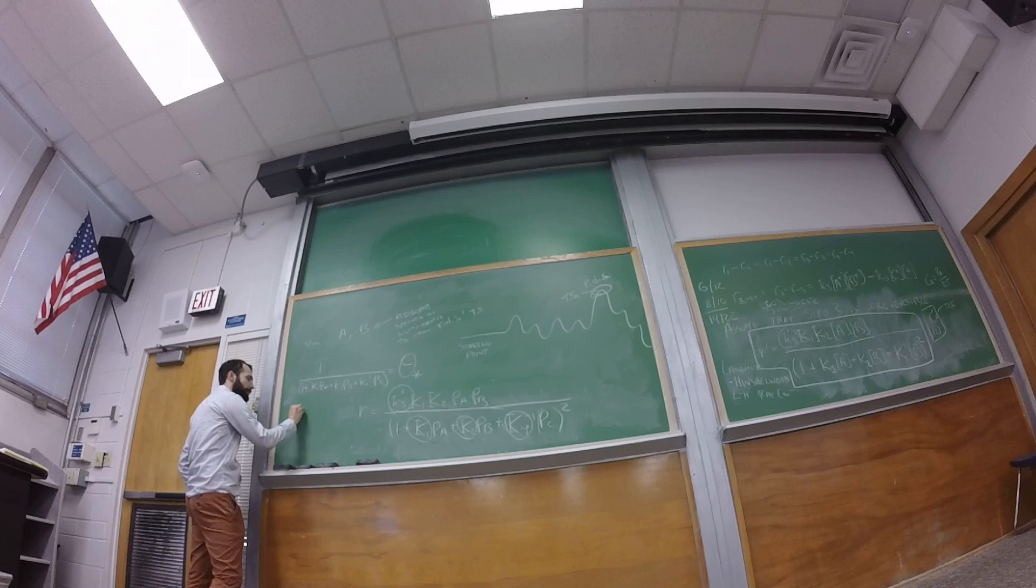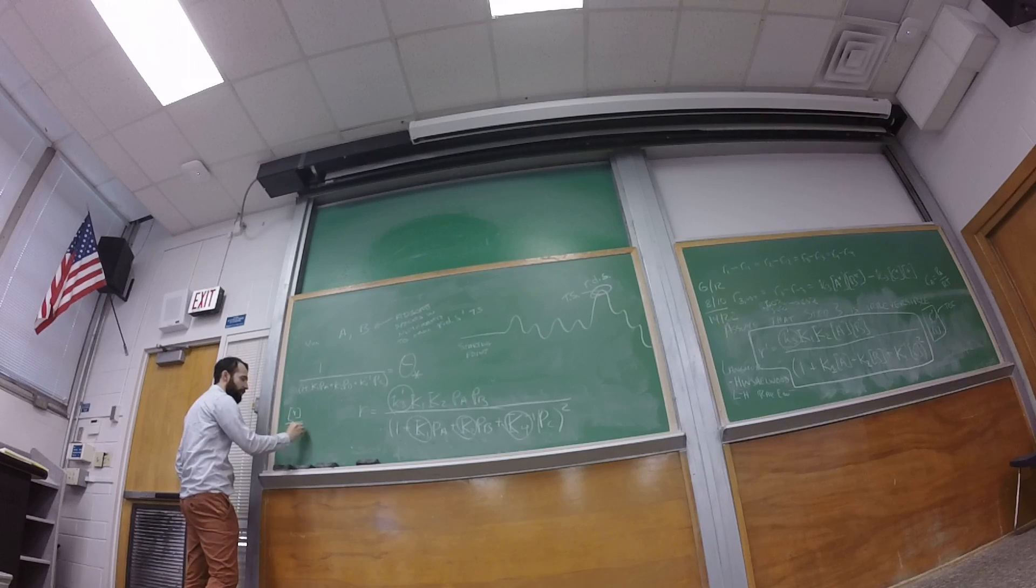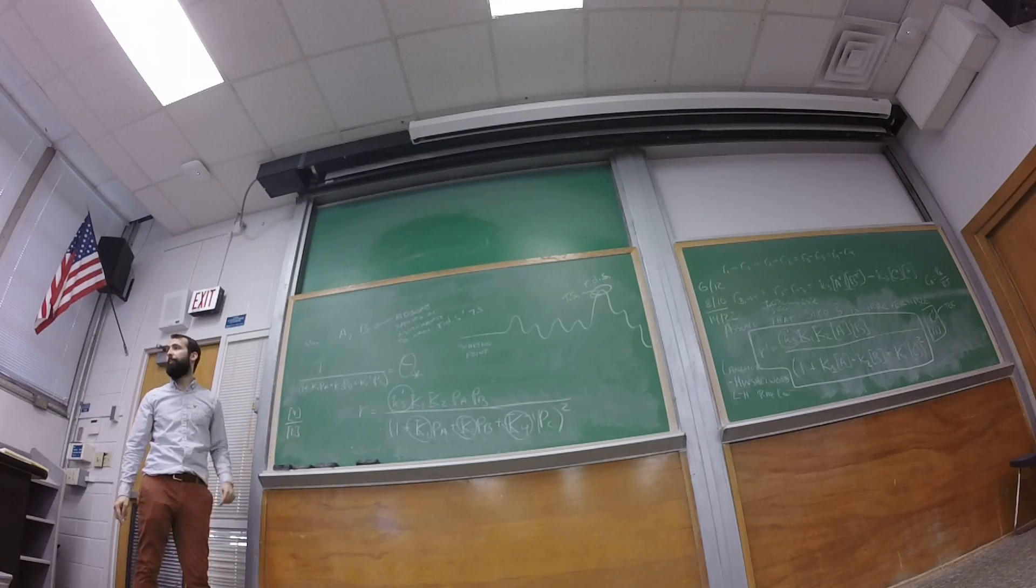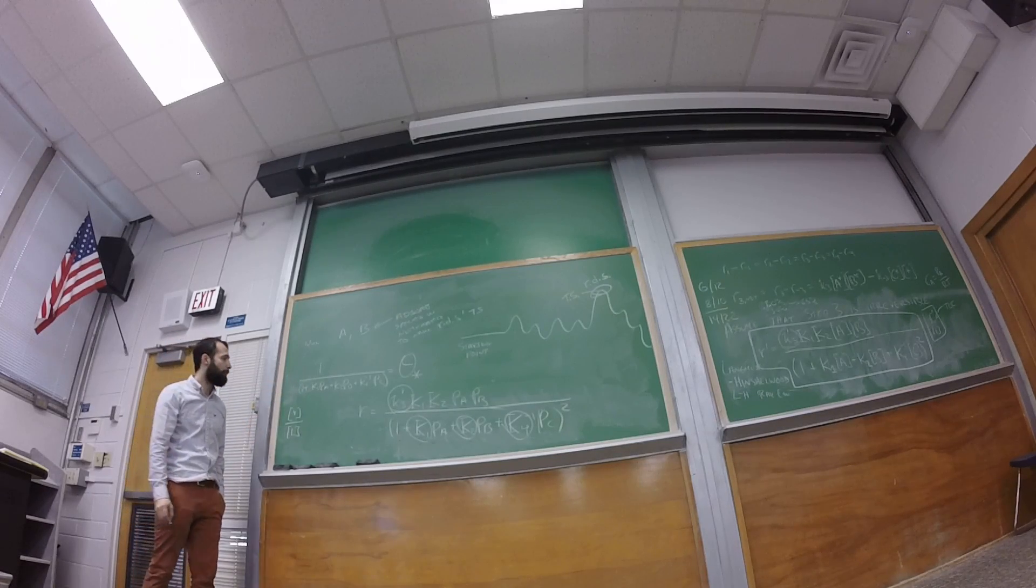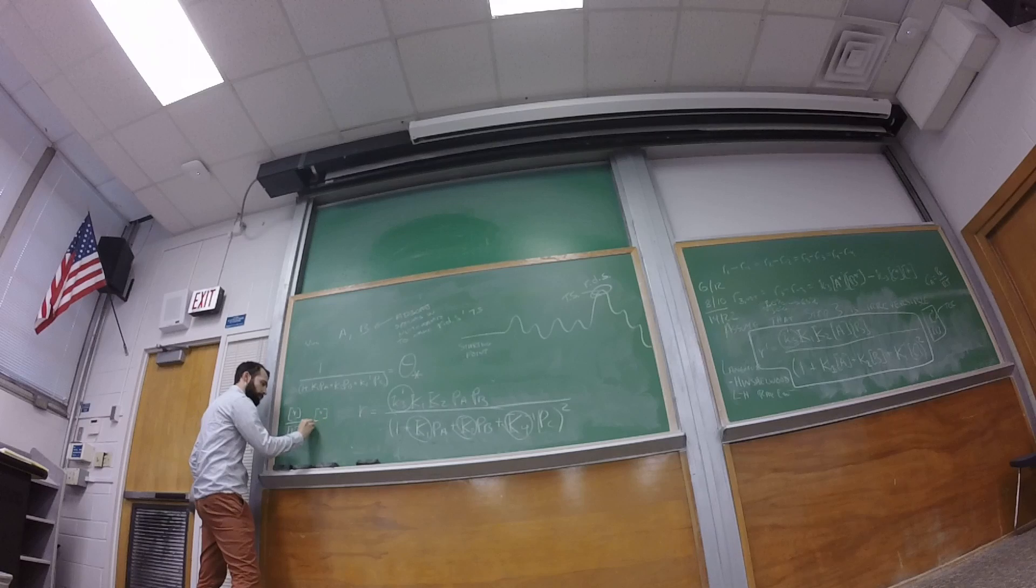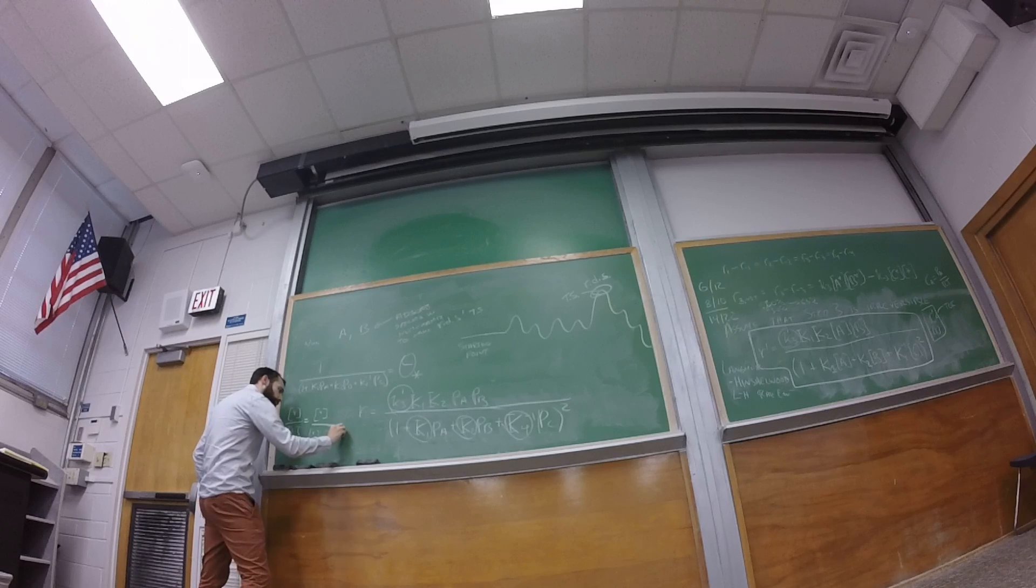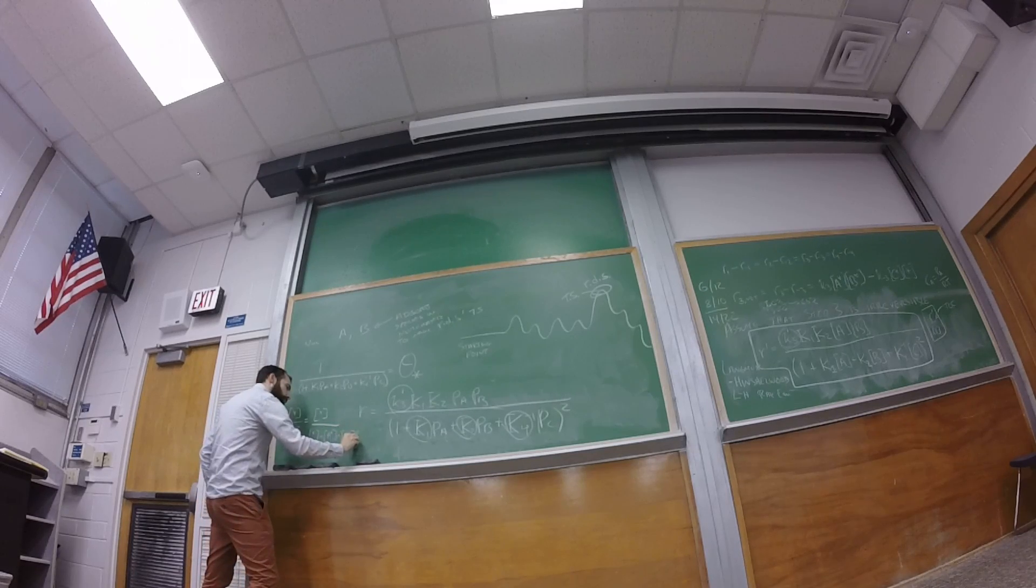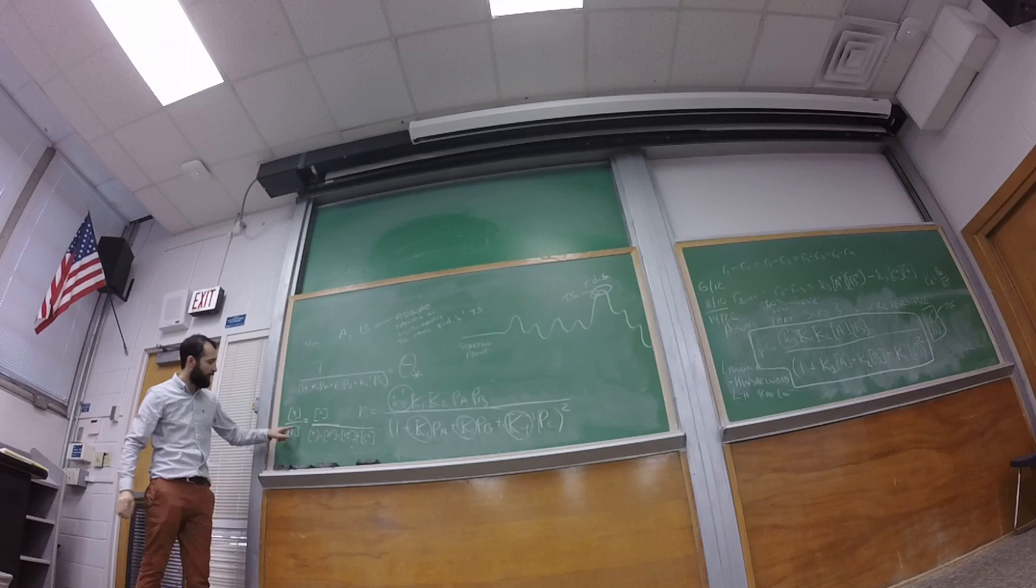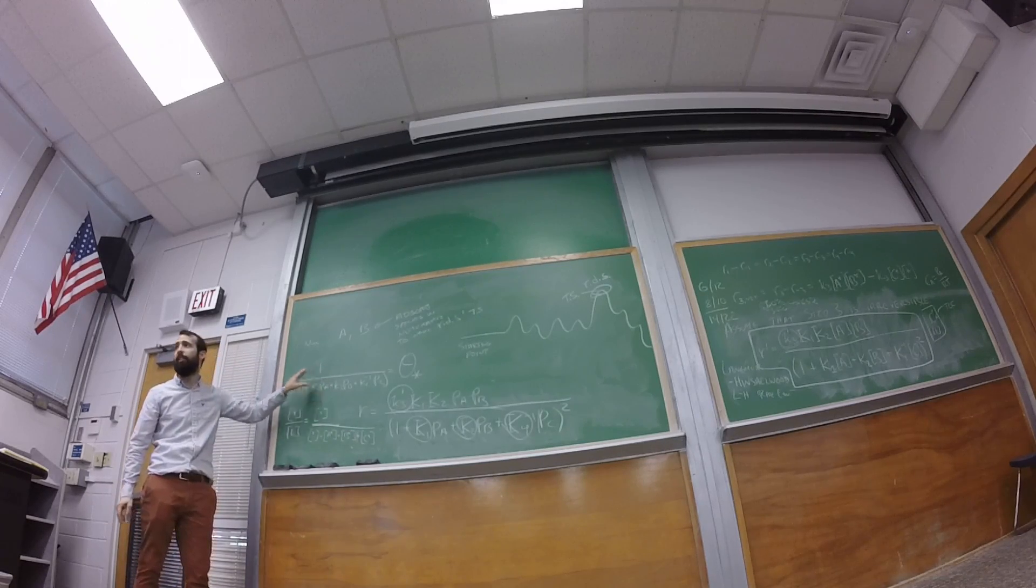And that comes from, the coverage is defined as the concentration of vacancies divided by concentration of total sites, and then we do our site balance, and this is what you get. That's our site balance, and then I can substitute in for all of these things, and you end up right here.